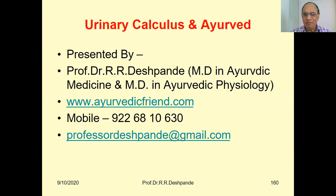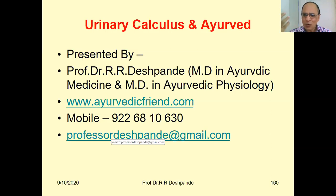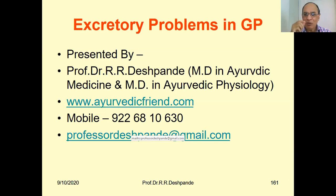I am Professor Dr. Rajendra Deshpande, MD in Ayurvedic Medicine and MD in Ayurvedic Physiology — two postgraduate degrees. My personal website is AyurvedicFriend.com, my mobile and WhatsApp number is 9226810630, and my mail ID is professordeshpande at gmail.com. You are always welcome to give me feedback, suggestions, and to contact me for different things.